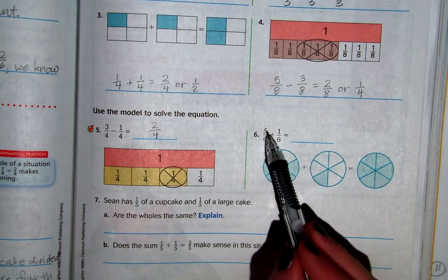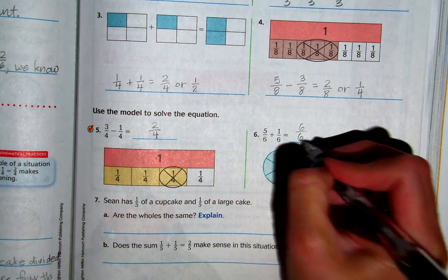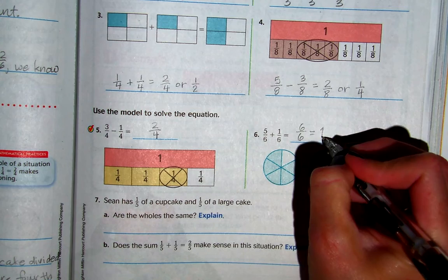Number 6, 5 sixths plus 1 sixth equals 6 sixths, which is also 1, 1 whole.